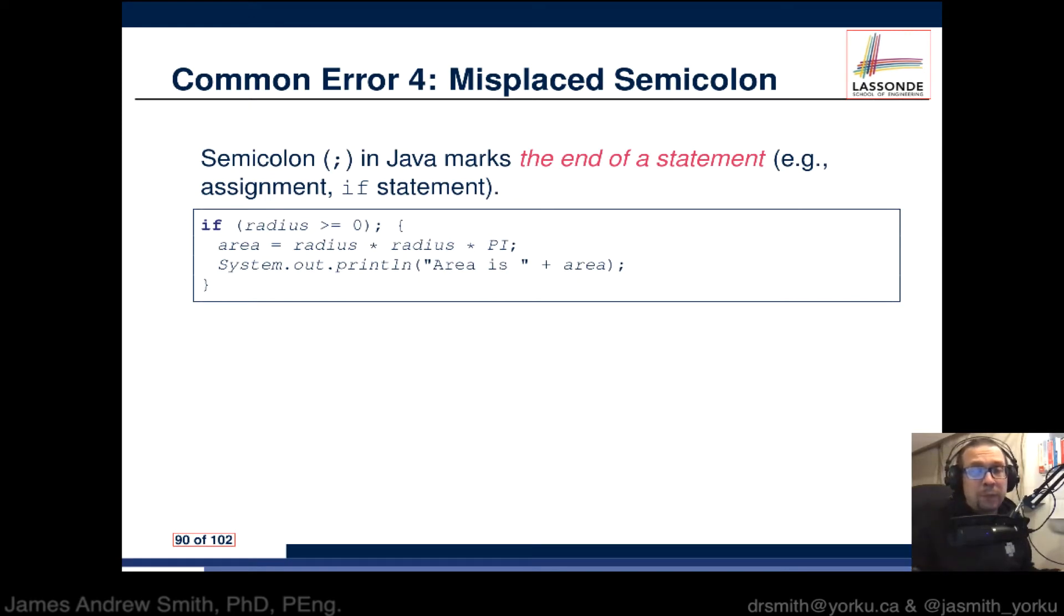What would happen if you were to write: if (radius >= 0); and then put your curly braces? You've got a semicolon right there - this is the semicolon right here.